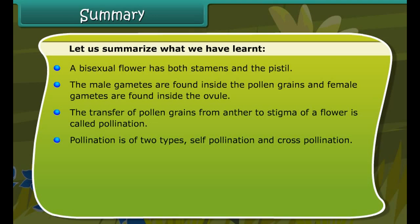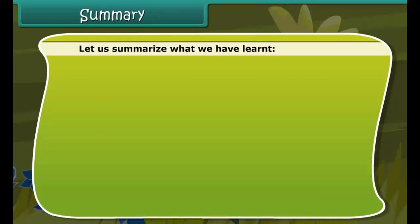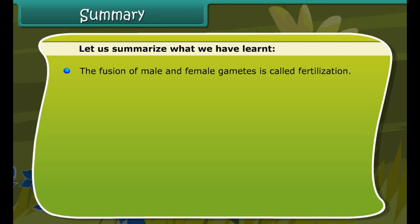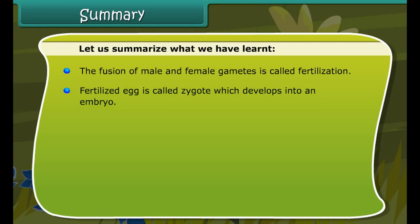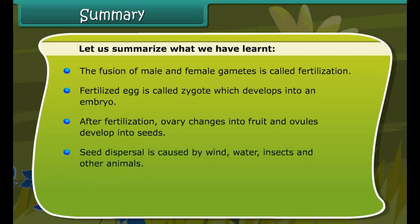In vegetative propagation, new plants are produced from the vegetative parts of a plant such as root, stem, and leaves. A unisexual flower has either the stamens or pistil. A bisexual flower has both stamens and pistil. The male gametes are found inside the pollen grains, and the female gametes are found inside the ovule. The transfer of pollen grains from anther to stigma of a flower is called pollination. Pollination is of two types: self-pollination and cross-pollination. In self-pollination, pollen grains are transferred from the anther to the stigma of the same flower or to the stigma of another flower on the same plant. In cross-pollination, pollen grains are transferred from the anther of one flower to the stigma of another flower of the same type.